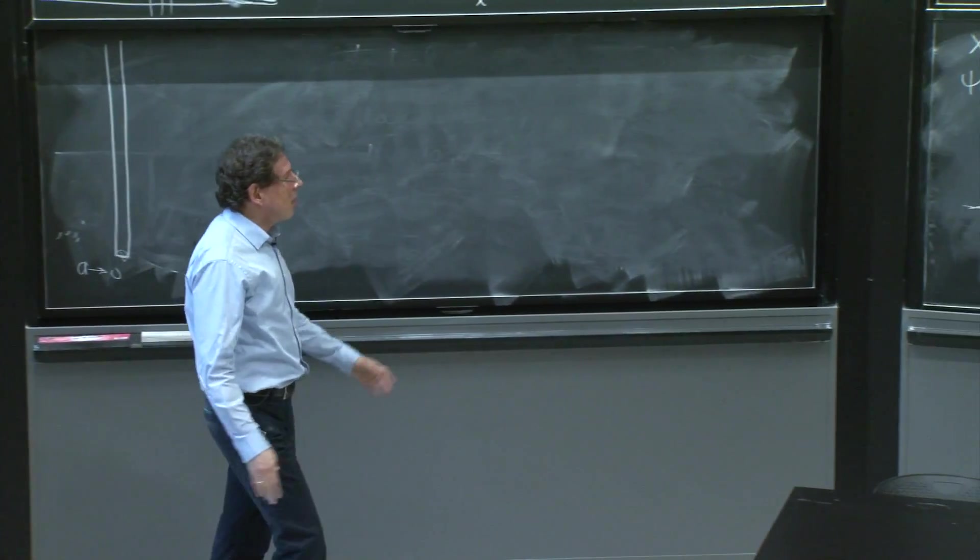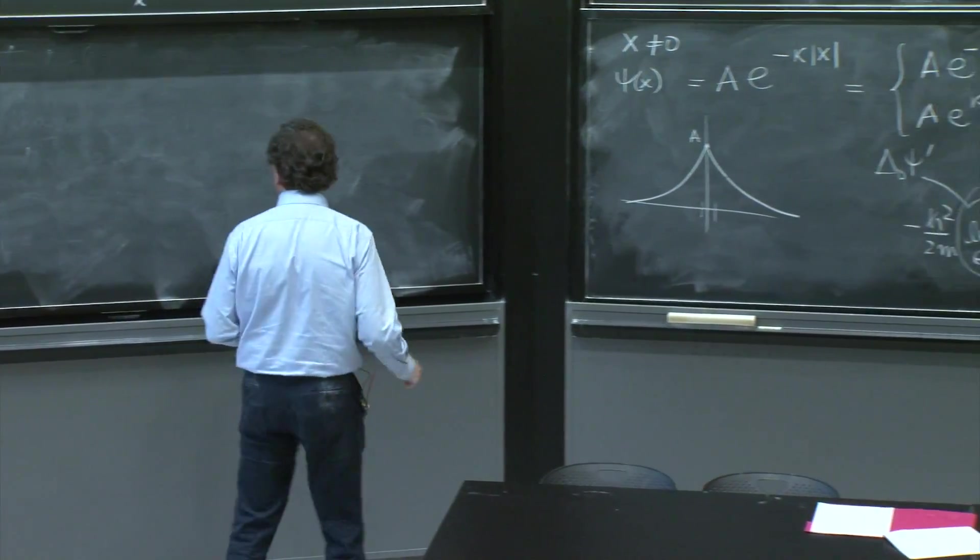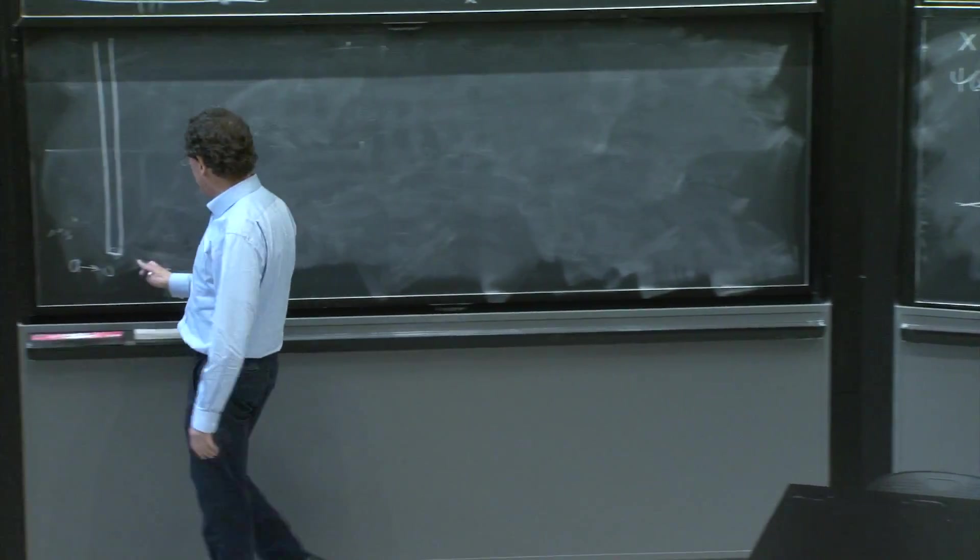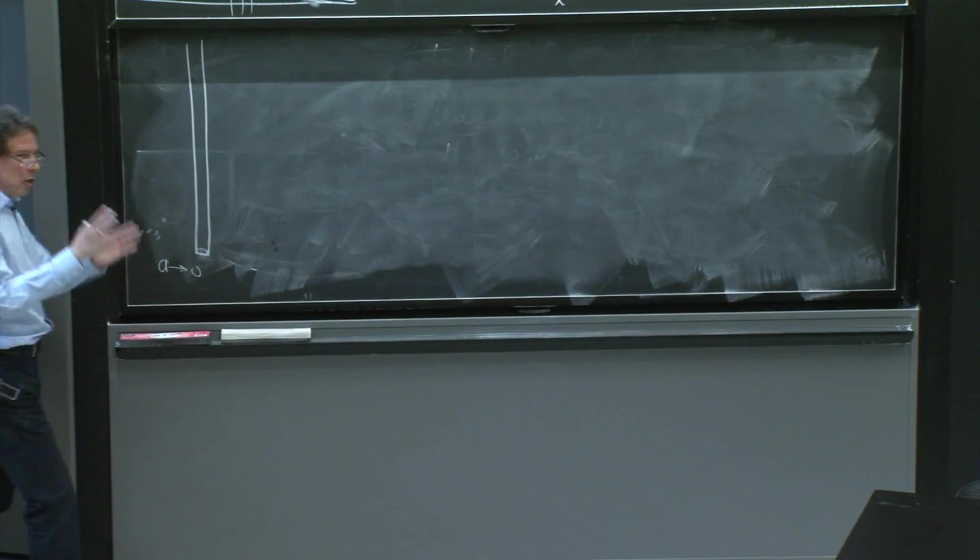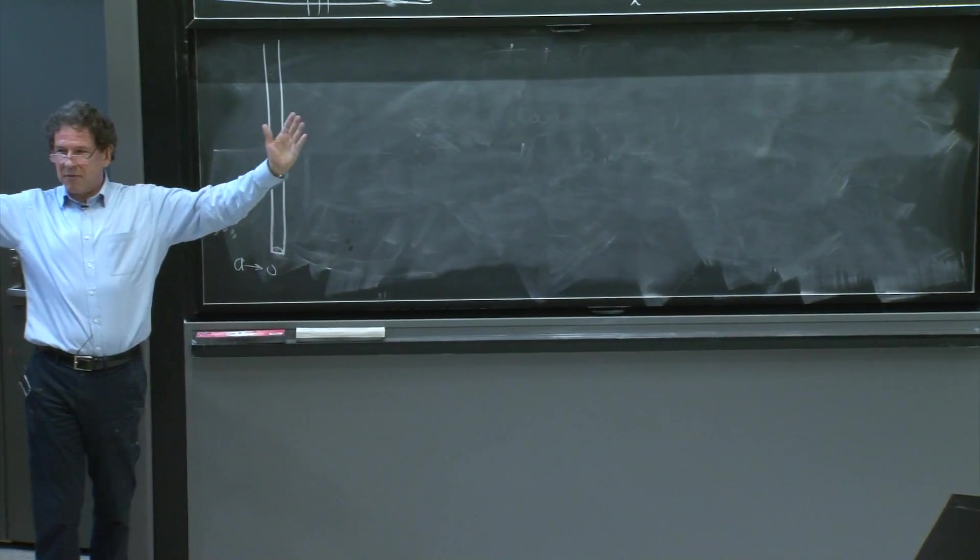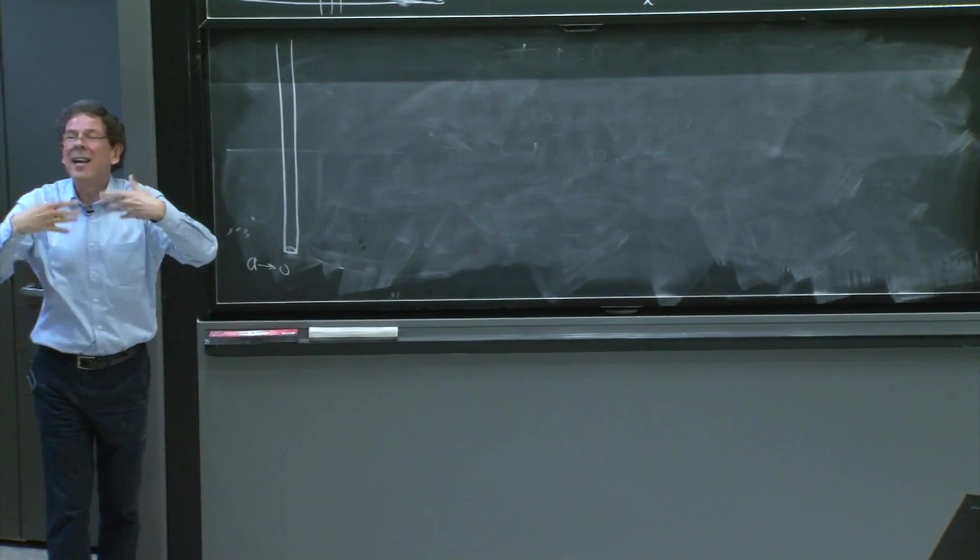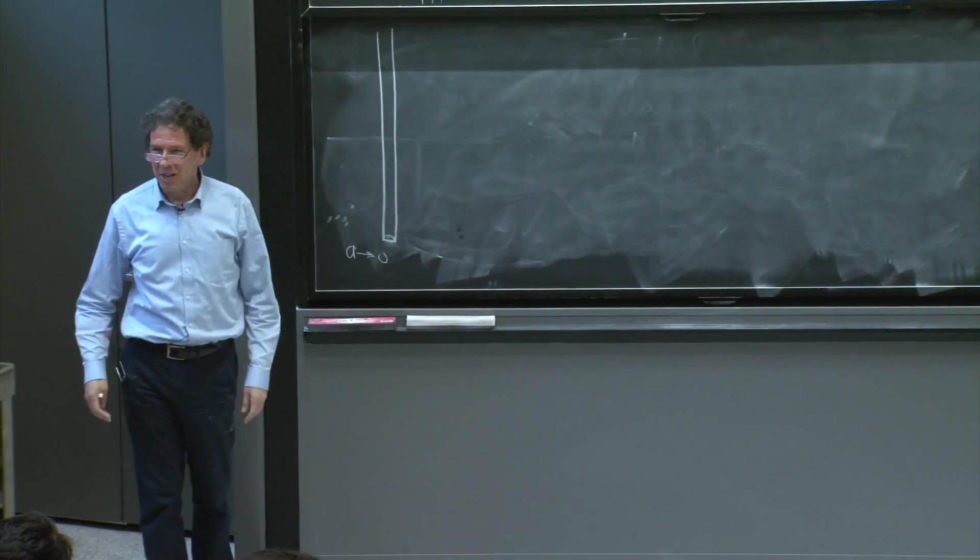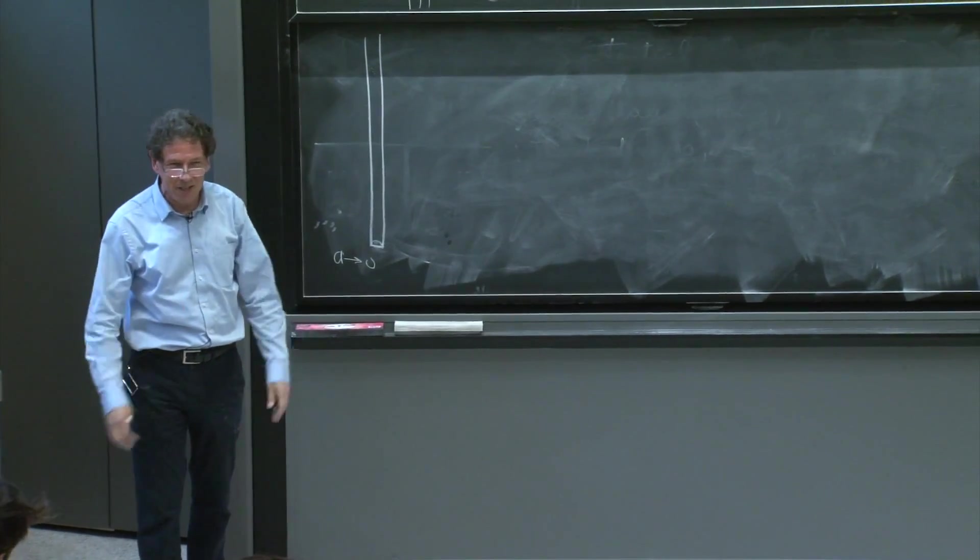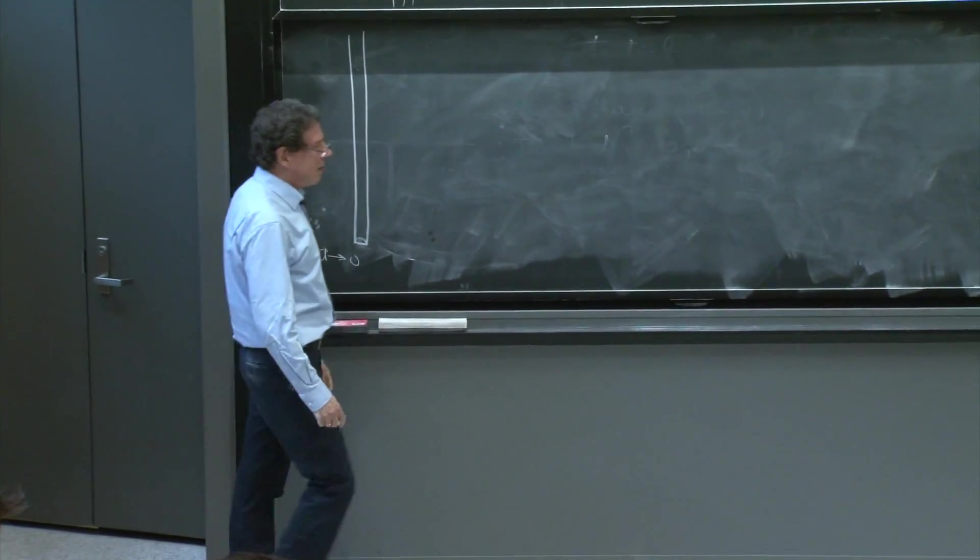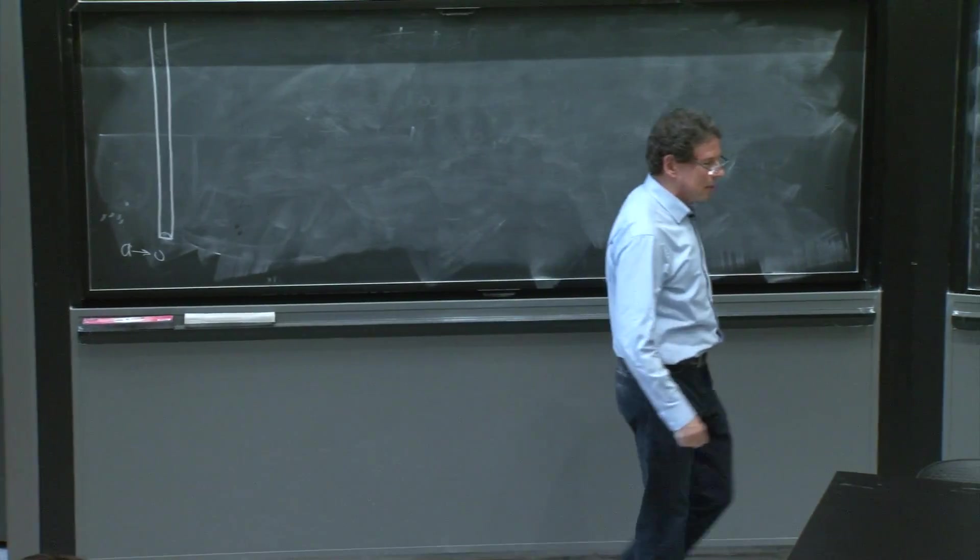So the only thing we have to now show is that if you have a wave function, say, let's begin with one with no nodes, as you increase the width of the screen, you cannot get more nodes. It's impossible to change the number of nodes continuously. So here it is. I'm going to do a little diagram.